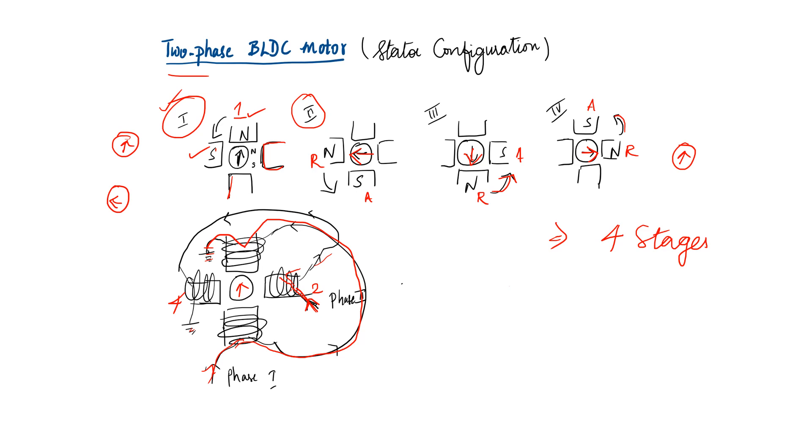So stator number one and stator number three are connected. So this one and three are connected together. So this is north pole, this will become south pole opposite. So this is south pole, this becomes north pole opposite. So in this way also...